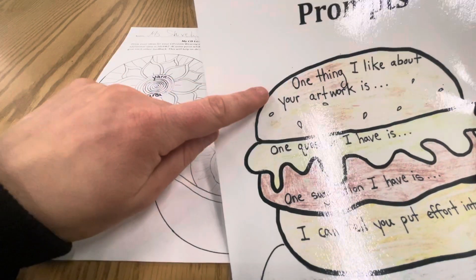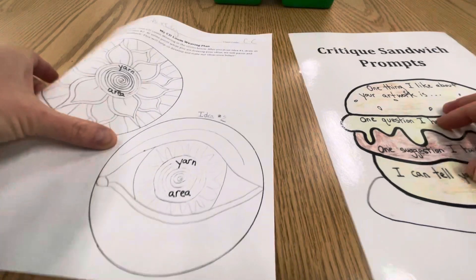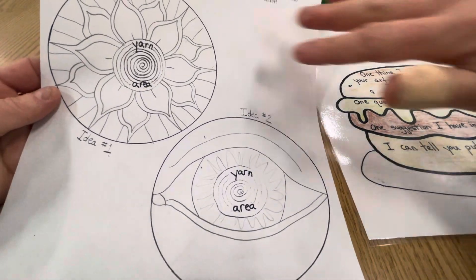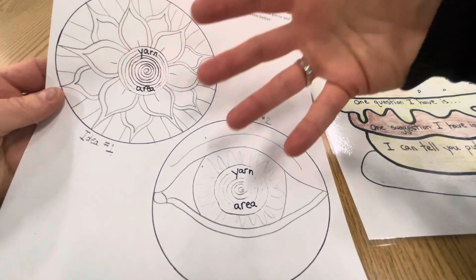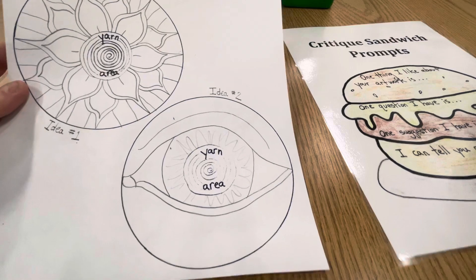So the first thing they'll start with is by looking to see one thing that they like about your artwork. So someone might look at my work and say, I really like how you put lines behind the flower. It kind of makes it look like the flower is popping out at me. That's interesting. I like that.